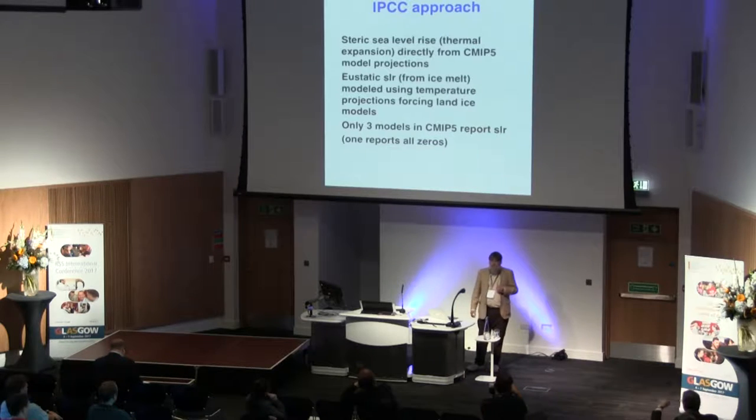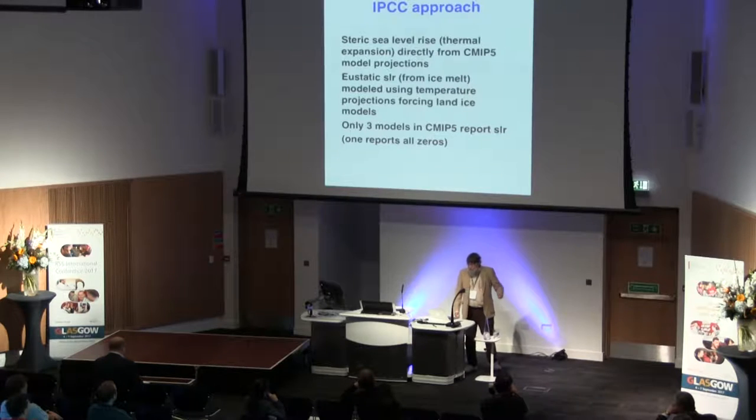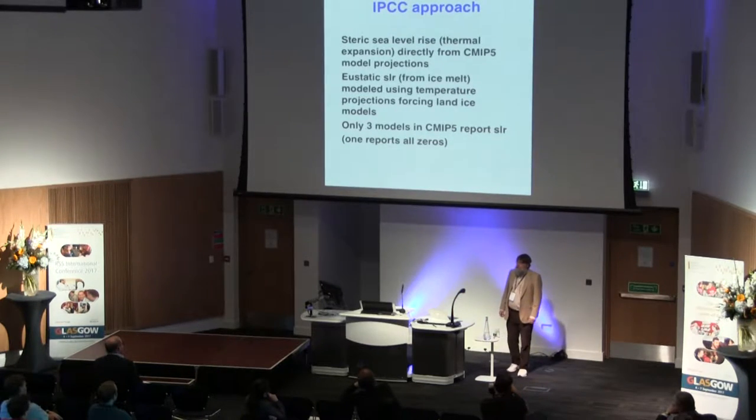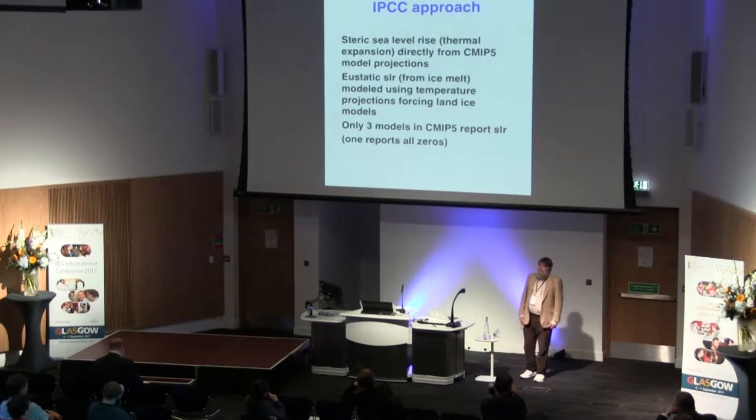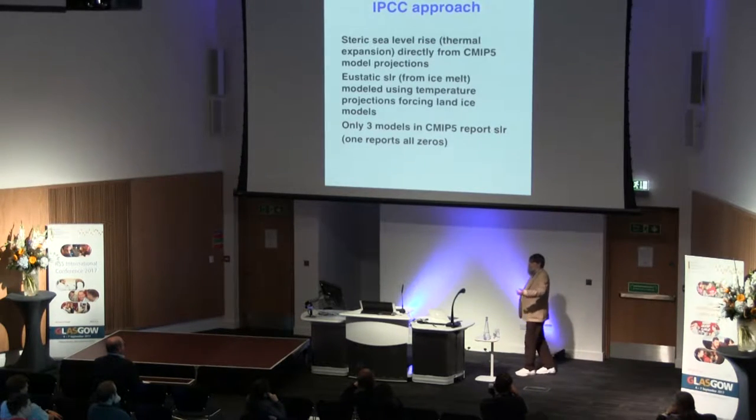I'm not terribly happy with that approach, so I'm doing things a slightly different way and we'll see that I get very similar results. There are three models in CMIP5 that actually calculate sea level rise, but it took quite a while to find them, and when we looked at the data from one of them it was all zero — they just output that variable without doing anything with it. Two models is too few to do any real analysis, so we're going to use something else called a semi-empirical approach in the climate science literature — though it seems to me to be purely an empirical approach.